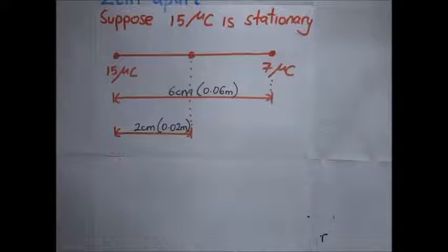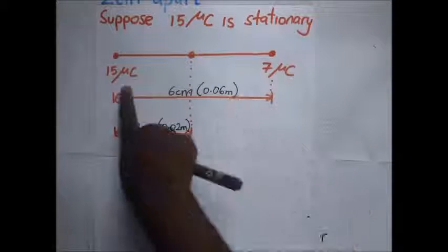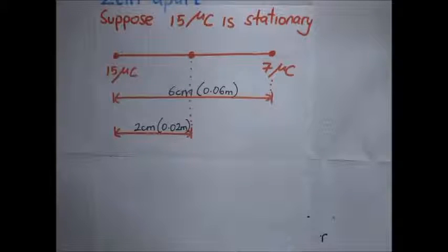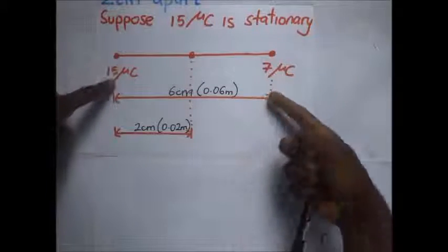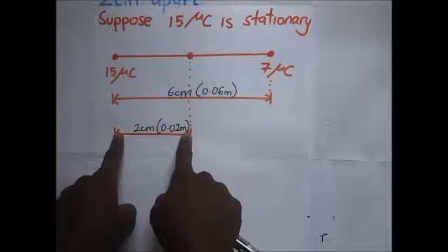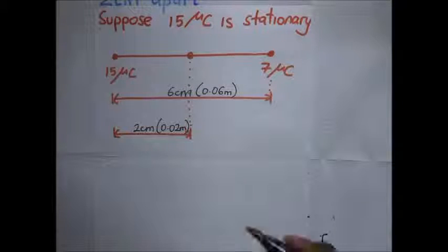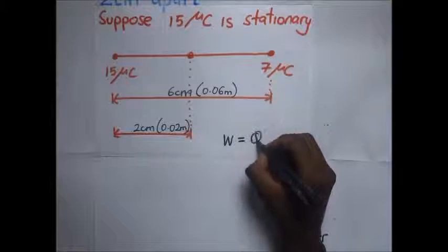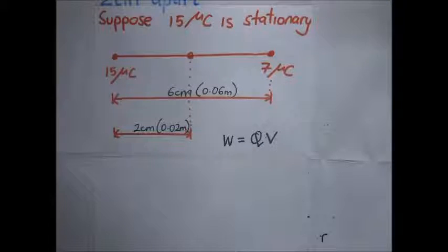To find the work done, we need to assume that one of them is stationary — either the 7 microcoulomb or the 15 microcoulomb. In this case, let us assume that the 15 microcoulomb charge is stationary and the 7 microcoulomb is the one that is moving, so that the two are eventually two centimeters apart. Remember we said that work done is equal to qV.